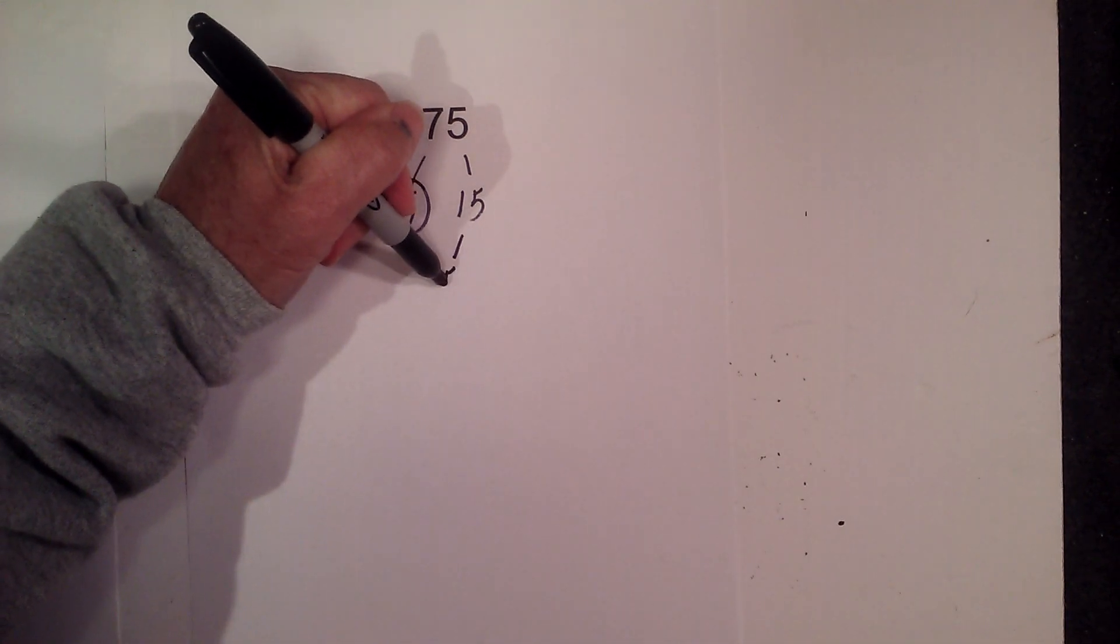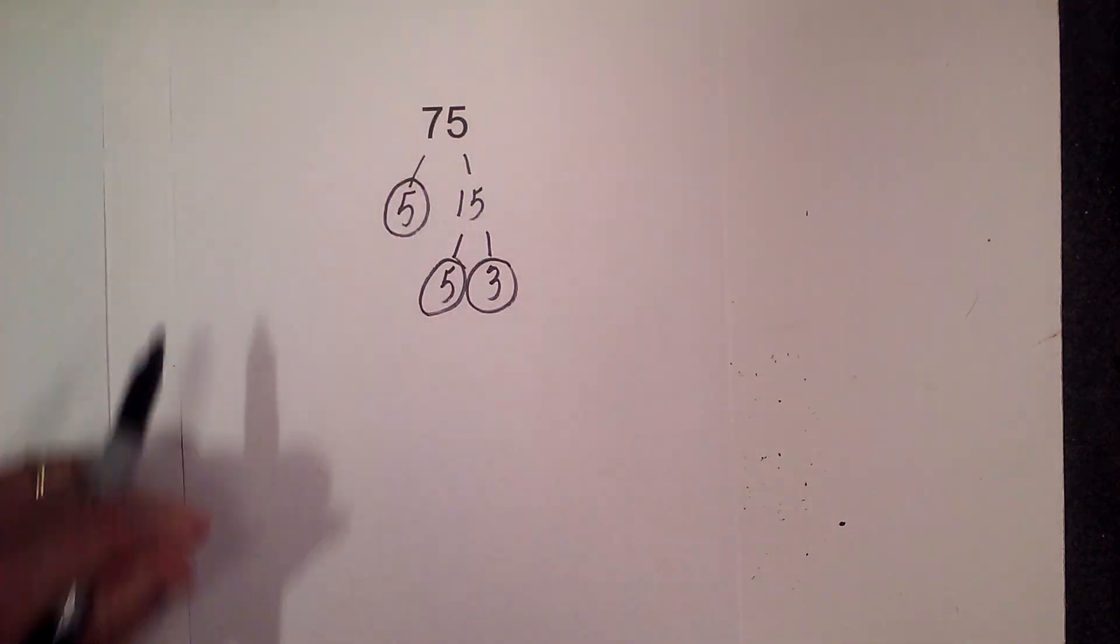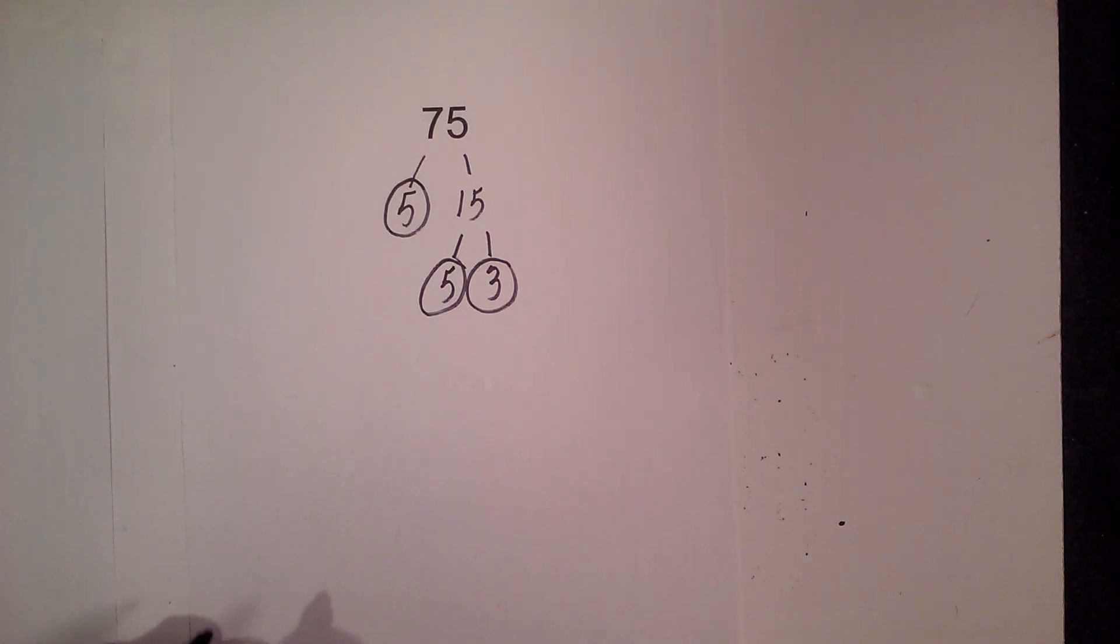And now 5 times 3 equals 15. Circle them because they are prime. So I'm now down to just prime numbers.